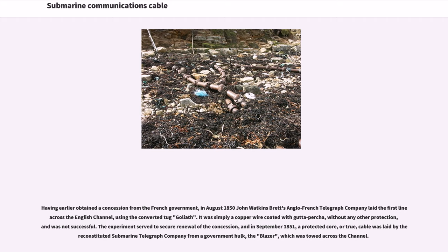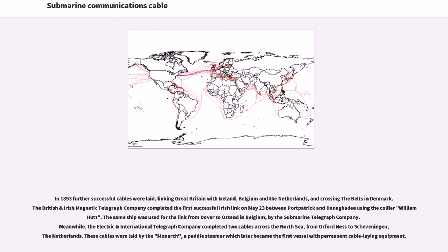It was simply a copper wire coated with gutta percha, without any other protection, and was not successful. The experiment served to secure a renewal of the concession, and in September 1851, a protected cable was laid by their constituted Submarine Telegraph Company from a government hulk, the Blazer, which was towed across the Channel.